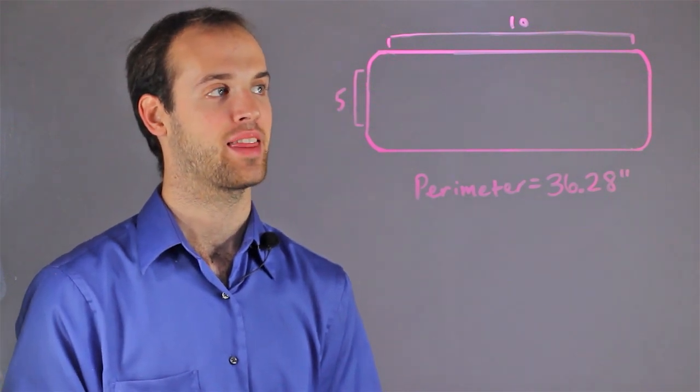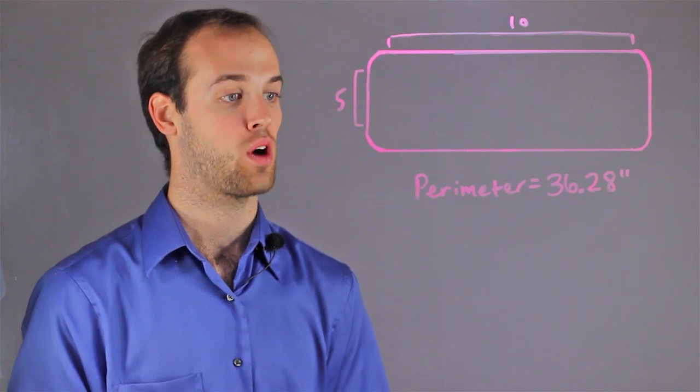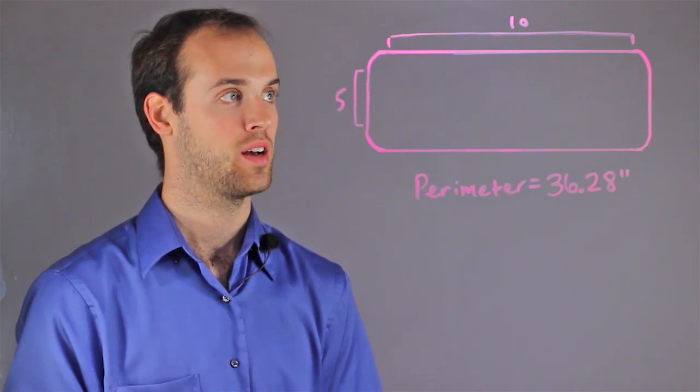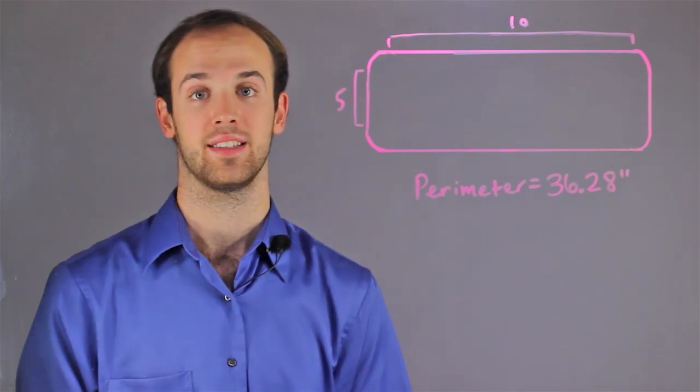Let's say we have a flat length of 10 and a flat width of 5, and we're also given that the total perimeter is 36.28 inches. What is the corner radius?